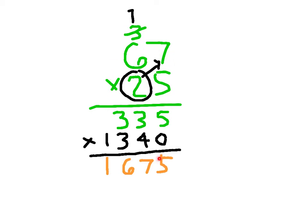67 times 25 equals 1,675. If you know the product of 67 times 20, the answer is 1,340. And the product of 67 times 5 is 335.